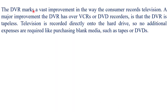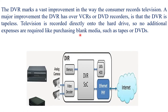The DVR marks a vast improvement in the way consumers record television. A major improvement over a VCR or DVD recorder is that it is tapeless — television is recorded directly on the hard drive, so no additional expenses are required for purchasing blank media such as tapes or DVDs. Analog cameras are connected to video decoders and then to the DVR, which is on a SOC (system on chip), and the data is passed to other blocks.